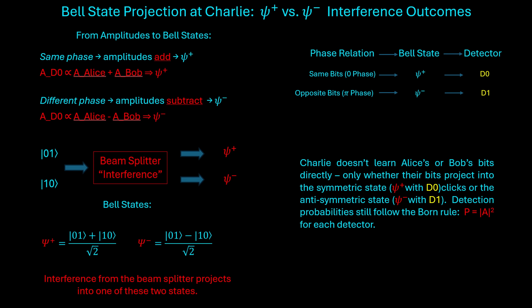On the right side of the diagram, Charlie maps each Bell state to a detector click. Same phase produces psi-plus, which triggers detector D0. Opposite phase produces psi-minus, which triggers detector D1. This gives Charlie exactly the information he needs — same bit or different bit — without ever learning the actual value of Alice's or Bob's bit. Charlie never gains access to Alice or Bob's secret bits individually; he only learns whether they matched or differed based on which Bell state the interference produces. The probabilities always follow the Born rule: P equals |A|² for each detector. This Bell state projection mechanism is what makes MDI-QKD both secure and practical.